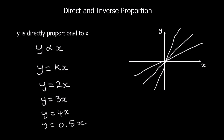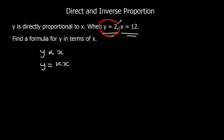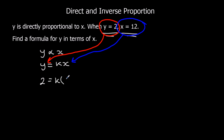So let's have a look at a question. Y is directly proportional to x. When y is 2, x is 12. We need to find the formula for y in terms of x. So since y is directly proportional to x, as an equation we've got y equals kx. What we're going to do is work out what k is. We know that when y is 2, x is 12, so we can substitute those values in. We've got 2 equals k times 12.